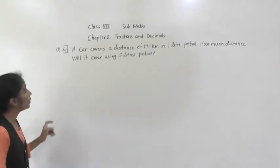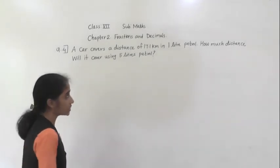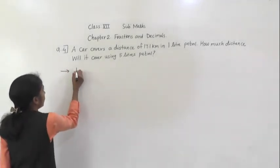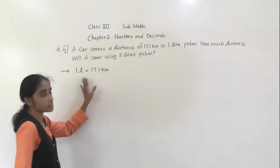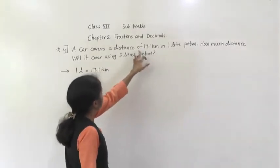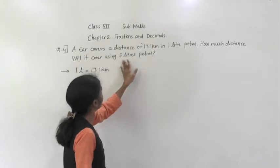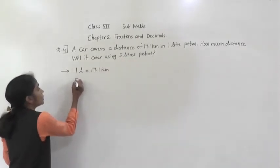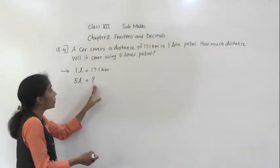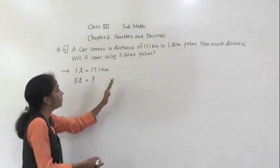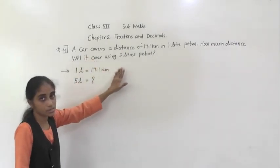Let's solve question number 4. A car covers a distance of 17.1 km in 1 litre petrol. What is given? In 1 litre petrol, how much distance covered by car? 17.1 km. In 1 litre petrol the car covers 17.1 km distance. How much distance will it cover using 5 litres of petrol?